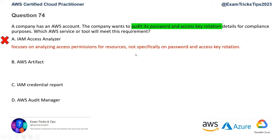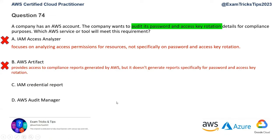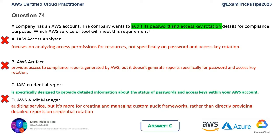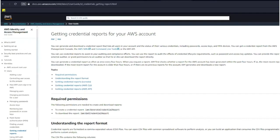AWS Audit Manager is more for creating and managing custom audit frameworks rather than directly providing detailed reports on credential rotation. This is a very specific question - we need to audit password and access key rotation. The answer is option C, IAM Credential Report. Its purpose is to provide detailed information about the status of passwords and access keys within your AWS accounts. The AWS documentation confirms this gives you status of various credentials including passwords, access keys, MFA devices, etc. So that's the correct answer.